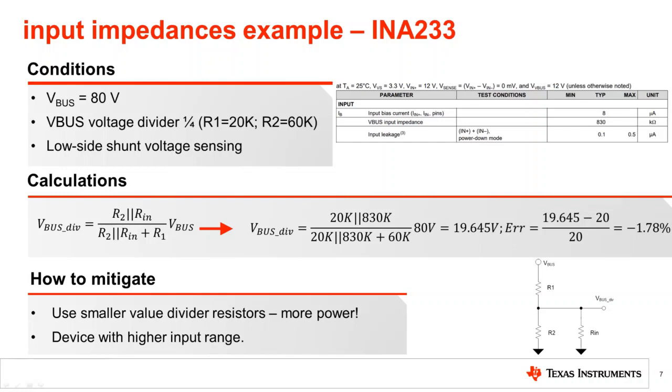While 1.78% is not bad, we paid for it with the price of burning 1 milliamp through the external divider. A better alternative is to use a device with higher input impedance, or better yet, a device that can take high input voltage directly.